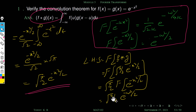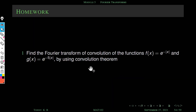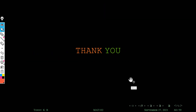The convolution theorem of Fourier transform is verified: the Fourier transform of f star g equals root 2 pi times the Fourier transform of f times the Fourier transform of g. This is your homework. Thank you all.